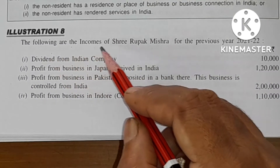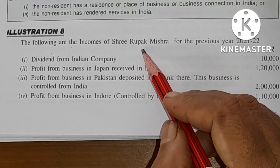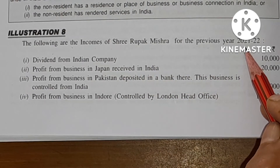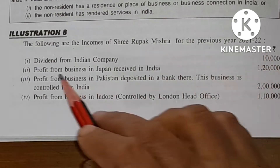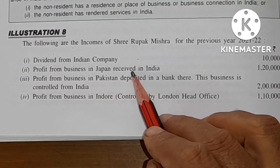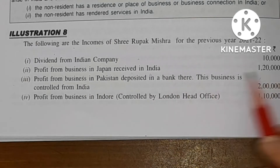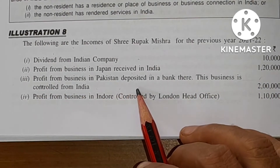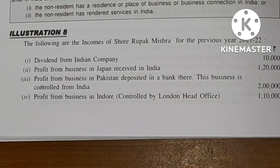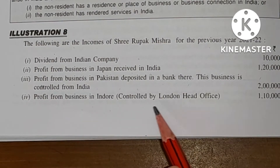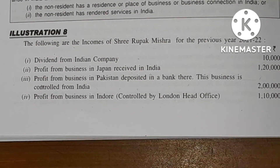The following are the income of Raghu Mishra for the previous year 2021-22: dividend from Indian company; profit from business in Japan received in India — 1,20,000; profit from business in Pakistan deposited in the bank there, this business is controlled from India — 2,00,000; profit from business in Indore controlled by London head office — 1,10,000.